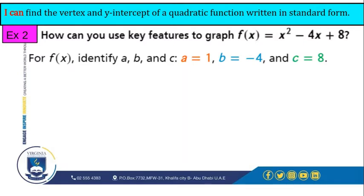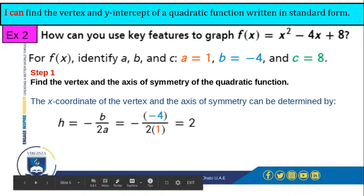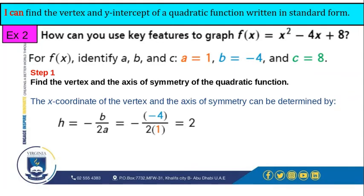Now, in order to find the axis of symmetry, we need to find the values of the vertex first. We have two letters for the vertex, which is h and k. In order to find k, we need to find h first. The h has a special formula, which equals negative b over 2a. Simply, in order to find the value of h, we will just substitute the value of b and a in this formula. So it's going to be negative negative 4 over 2 times 1, which equals 2.